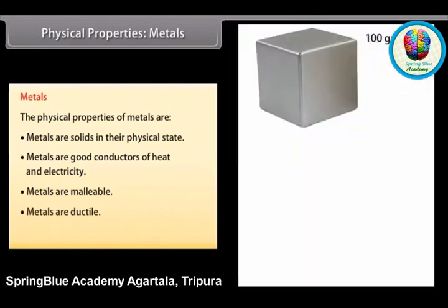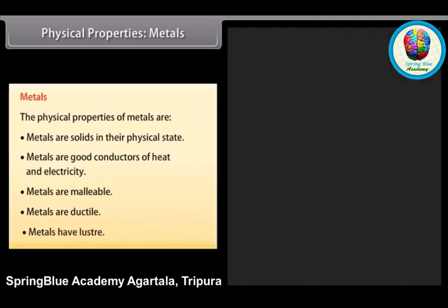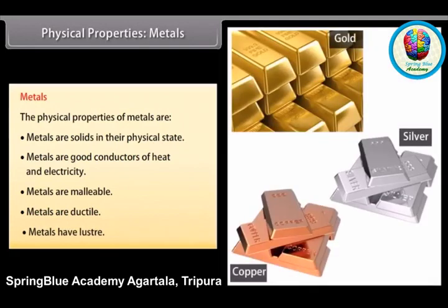Ductile: metals can be drawn into wires. For example, 100 grams of silver can be drawn into a thin wire of about 200 meters long. Luster: metals reflect light from their shiny surface and can also be polished. For example, gold, silver, and copper are metals with a shiny surface and can be polished.